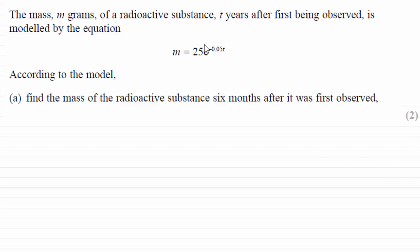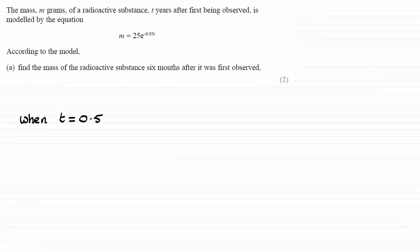So, just put t equal to 0.5 into our equation and if you do that when t equals 0.5, you substitute it in, you're going to get this, work this out and it comes to 24.382 and so on.